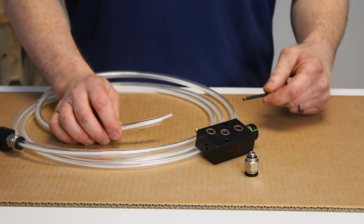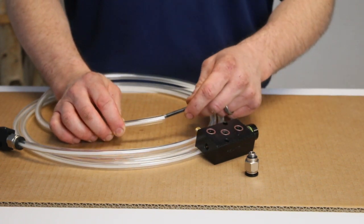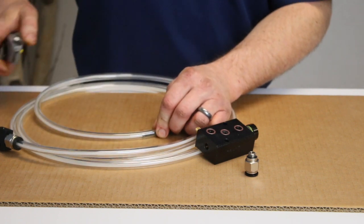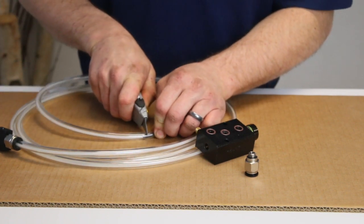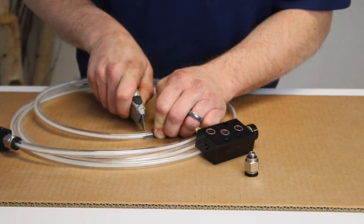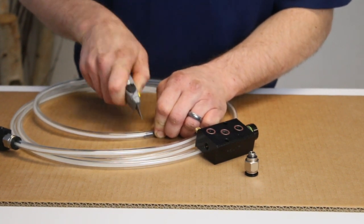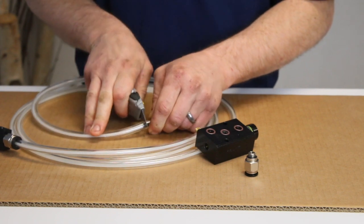Instead we recommend inserting a tool into the 3/8 tube and pushing the capillary back in, and then cutting right along where the tool was inserted. This ensures that you won't nick or damage the 1/8 inch capillary line at all.